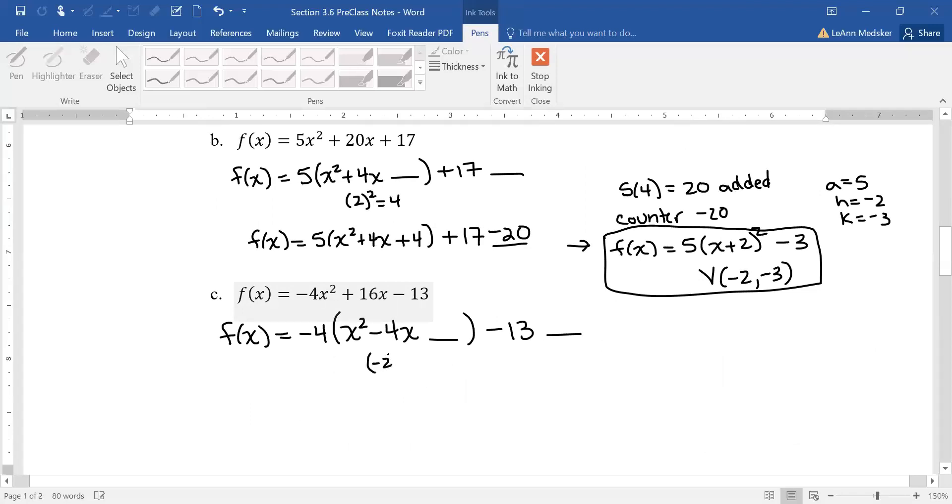So then I'm going to take half of that which would be negative 2 and square it. So I'm going to be adding positive 4 here. x² - 4x + 4 and then we write our minus 13. Now we have to think about what we really did here, we did negative 4 times 4 which means we had a negative 16. So to counter that you actually have to do positive 16. So it won't always be adding at the end or subtracting, it depends on what your number is when you multiply the number out front times the constant inside. So my counter this time is actually a positive.